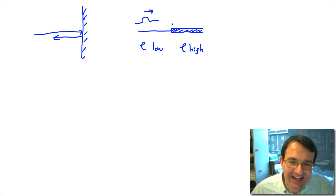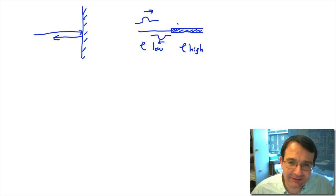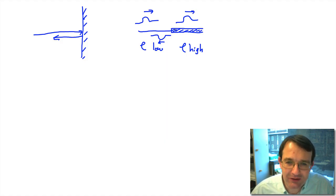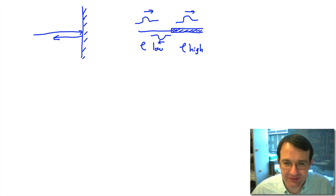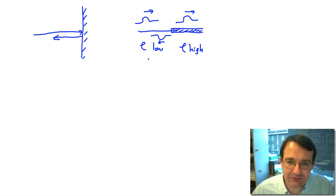If the second string is heavier, the reflected wave has the opposite sign. Because this string is harder to move than the light string on the other side, the reflected wave has an opposite phase. The transmitted wave carries on with the same phase, but the reflected wave has an inverted phase — because this boundary is a little bit like a clamped end of the string, creating an additional resistance due to the higher mass per unit length.